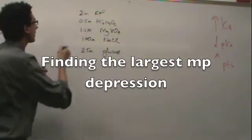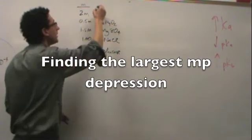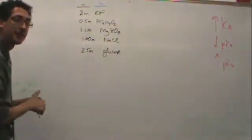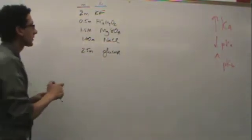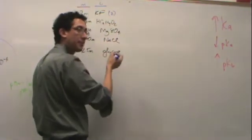In this case, we've got here molality. And then here we've got the molecule which tells us I. So for example, I here is 2 because it's potassium and chlorine.